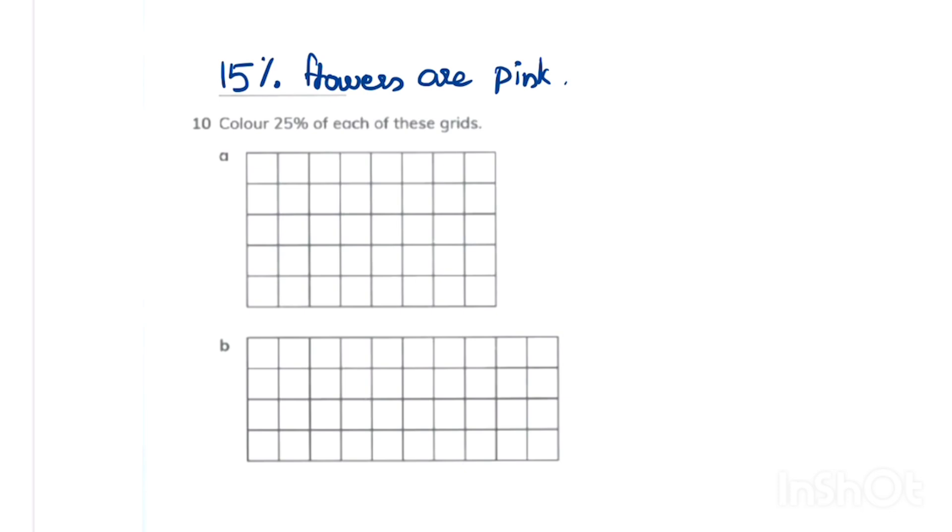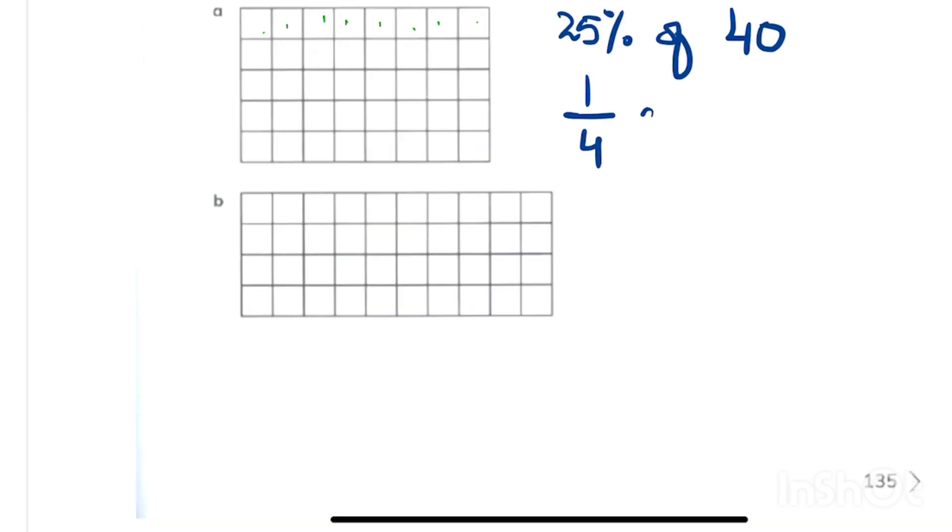In this question we have a 40 grid box and here we need to color 25% of it. 25% means 1 fourth. So here we will write 1 fourth of 40 and then we will simplify it. So we need to color 10 boxes. Just 10 boxes.